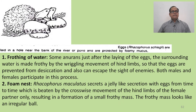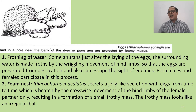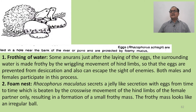Frothing: Rhacophorus lazuli forms a froth or foam nest. Just after laying eggs, surrounding water is made frothy by wriggling movements of the hind limbs, so that the eggs are prevented from desiccation and can escape the sight of enemies. Both males and females participate in this process.